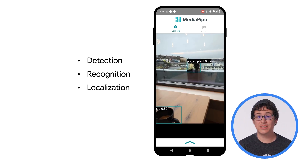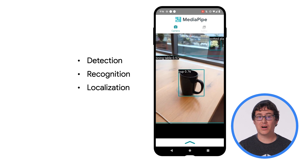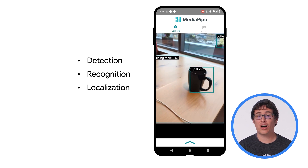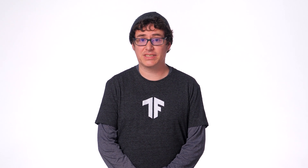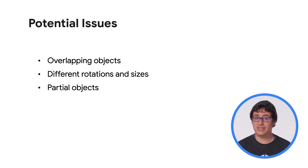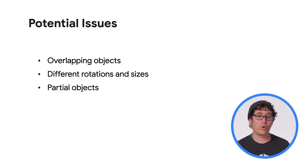And the last step is localization. This is where the bounding boxes are determined for the detected objects. The other thing to know about object detection is that it can be incredibly difficult to get great results when using a custom model. So you'll want to keep an eye out for edge cases that may need to be addressed. Some of these edge cases include overlapping objects, different rotations and sizes for objects compared to the training data, or only partial objects existing within an image.